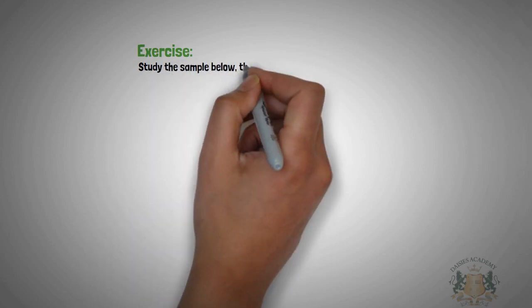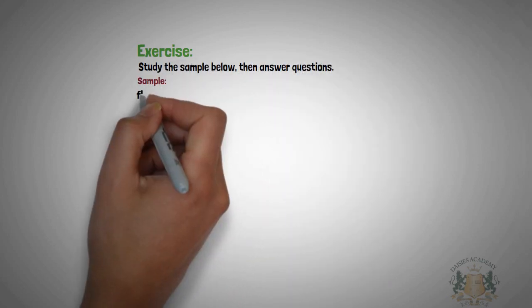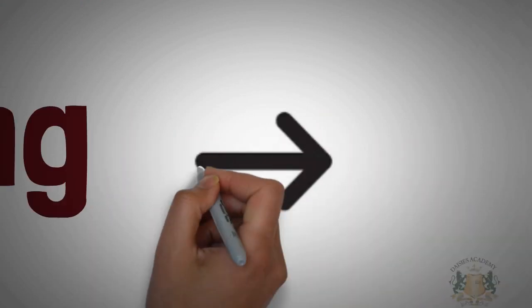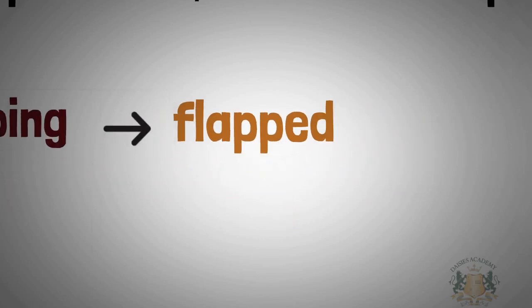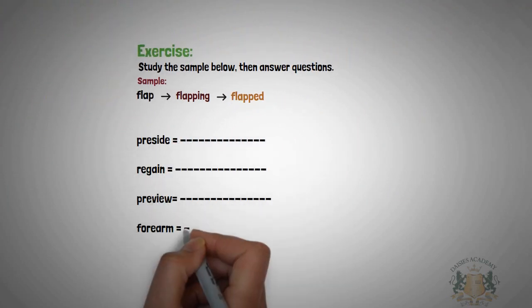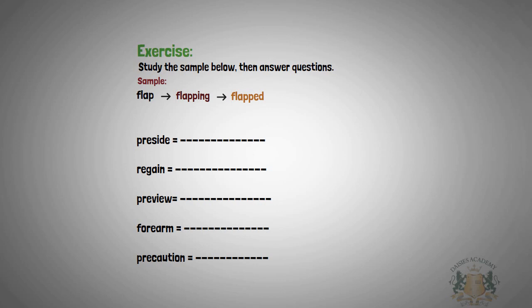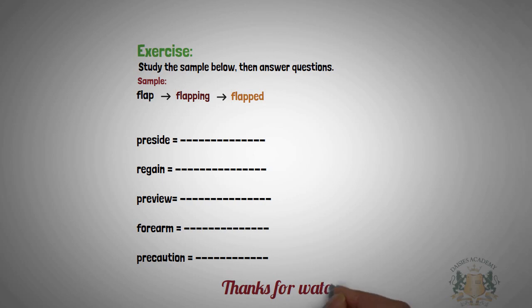Here is an exercise for you to do. Look at the sample: 'flap' → 'flapping' — the last letter was doubled because of the consonant-vowel-consonant pattern. Now look at the questions: number one, 'precise'; number two, 'regain'; number three, 'preview'; number four, 'forearm'; number five, 'precaution'. I believe you enjoyed today's lesson. Do have a wonderful day. Hope to see you next week. Bye!